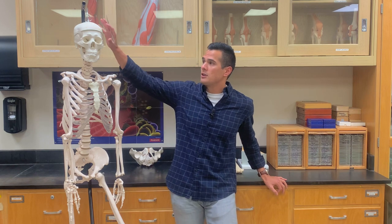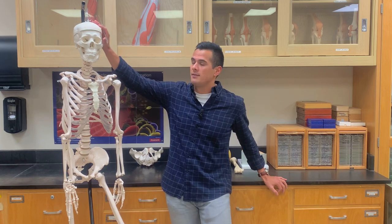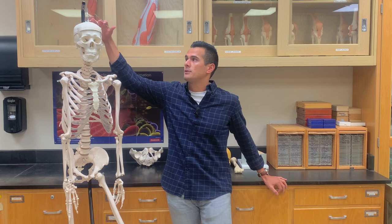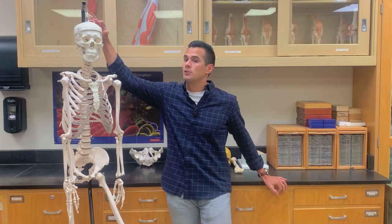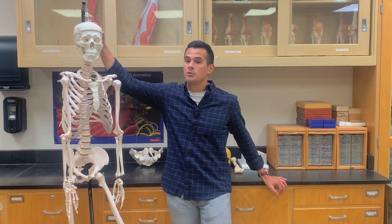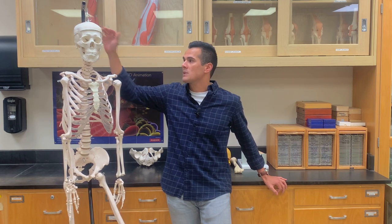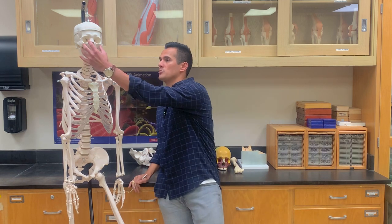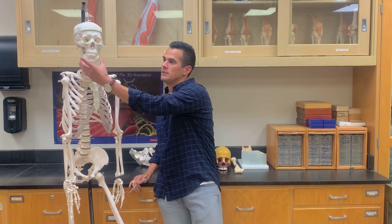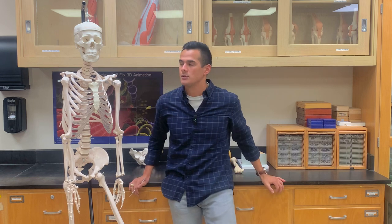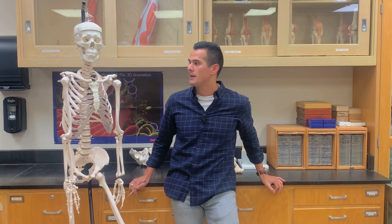Starting off, we have the skull. Within the skull, you have the cranium — the part where the brain is. You also have the facial bones, and then this structure is what's known as the mandible.